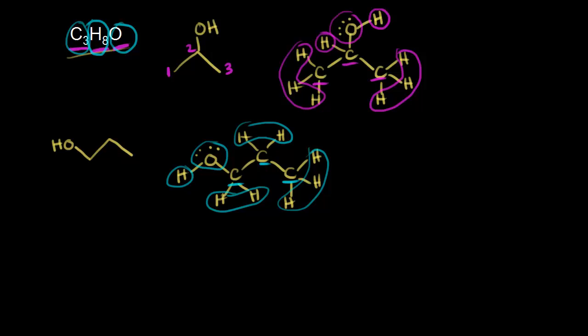Some students might think: we put an OH on carbon one, but what if we put an OH on the other side? However, hopefully it's obvious that those two represent the same molecule — there's no difference in how they're connected structurally. So that's the same molecule, just two different ways to draw it. It's not a new structural isomer.